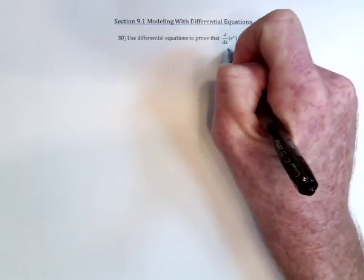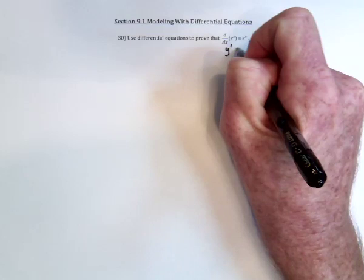Or in other words, this is saying prove that y prime is equal to itself. And if y prime is equal to itself, show me that the answer has to be e to the x.